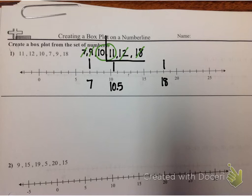So even though we just found the median between 10 and 11, we're still going to include 11 in our upper quartile.